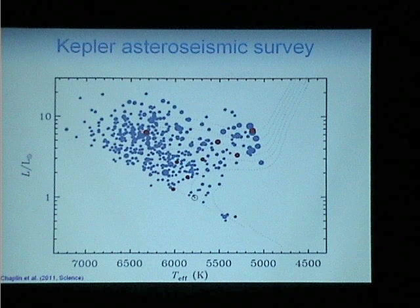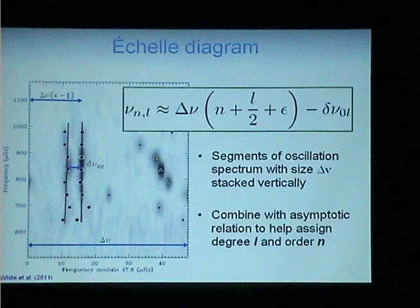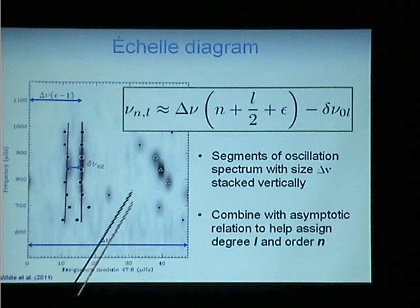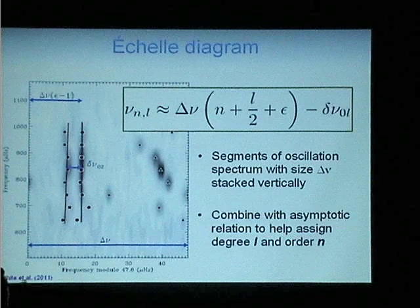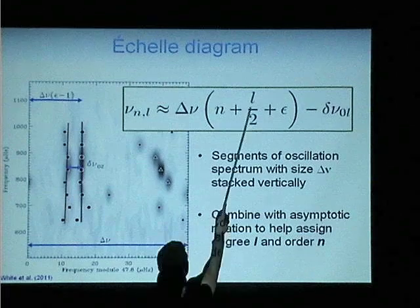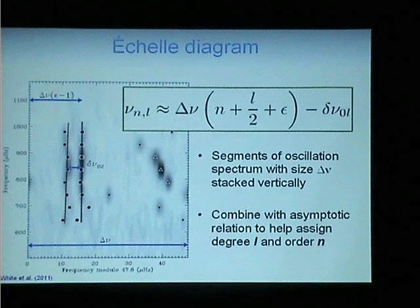Now that we have this data for a large sample of stars, we can start looking at ensemble properties. Starting with the simplest analysis using those global oscillation properties: the asymptotic relation for solar-like oscillations, or p-modes in general. In the limit of high radial order, you can estimate frequencies as the large frequency separation multiplied by something depending on the radial order, the spherical degree, and a phase we call epsilon. The small separation describes the offset between modes.